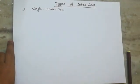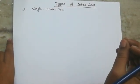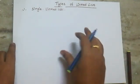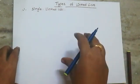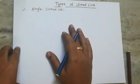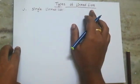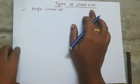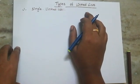Hi students. In the last class we covered linked list definition, advantages and disadvantages. So now in this class we will cover types of linked list. In types of linked list, we have three types of linked list available.